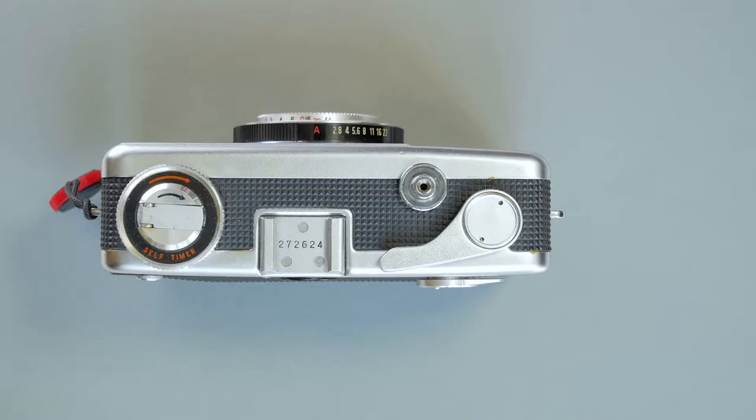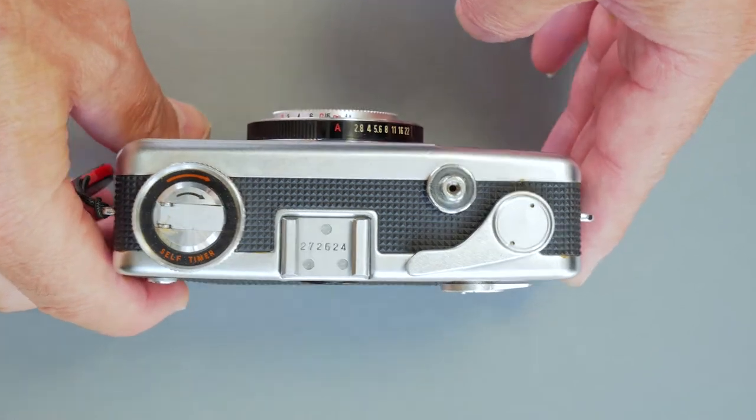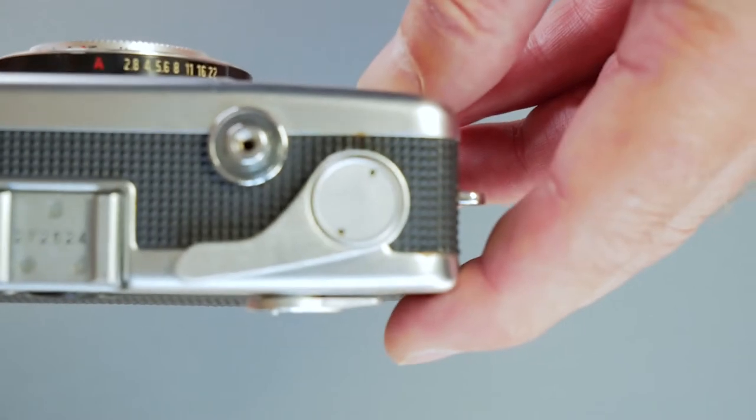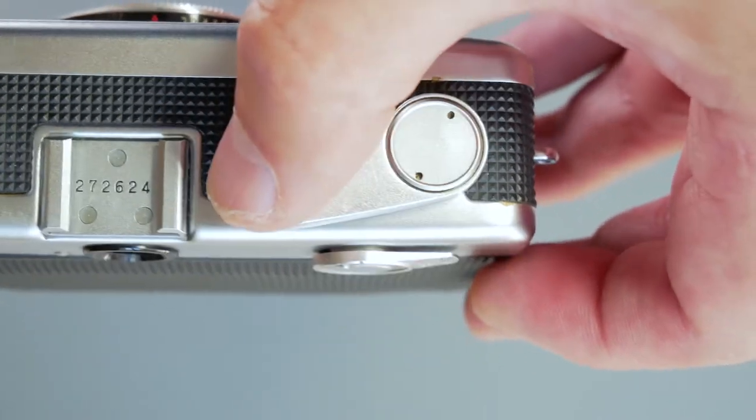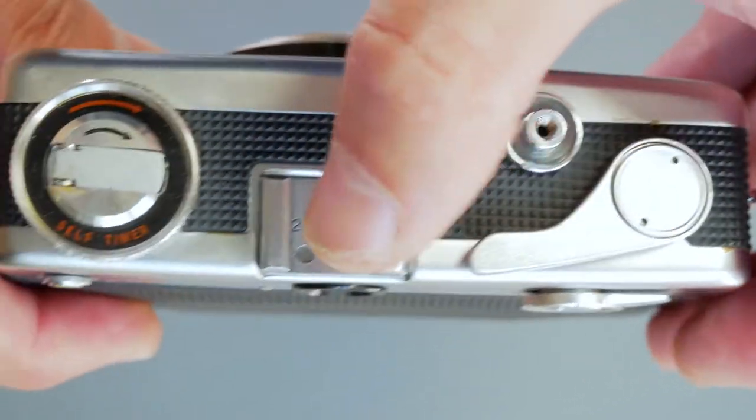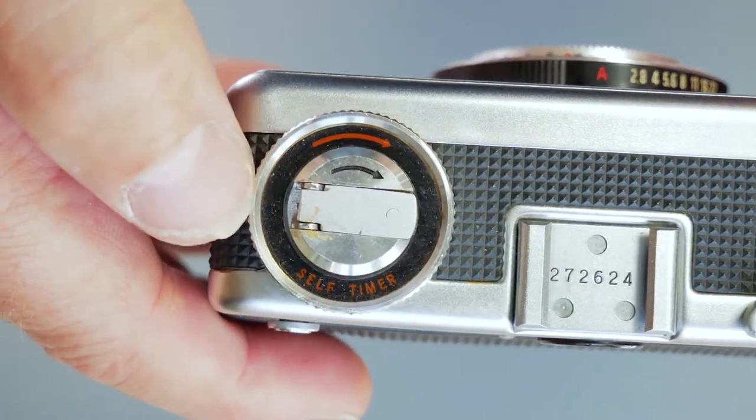Right, let's take a closer look at the Yashica half frame camera that I've just used here. If we look on the top, we've got the wind lever, shutter button,